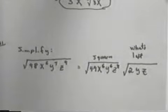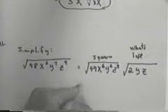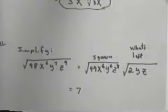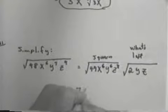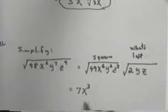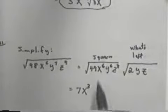Now, once you break it into the squares and what's left, all you have to do is evaluate the square root. The square root of 49 is 7. The square root of x to the 6th is going to be x cubed, because x cubed times x cubed is x to the 6th.